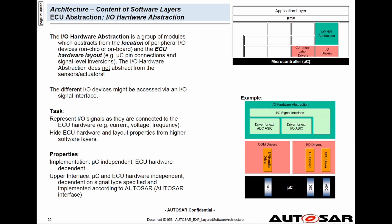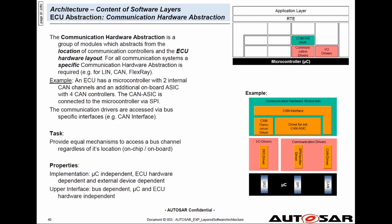IO hardware abstraction abstracts the hardware layout, that is the microcontroller pin, but does not abstract the sensor or actuator which is connected to the pin. So this layer is microcontroller independent but ECU hardware dependent. Next is the communication hardware abstraction, which abstracts the communication interfaces. We have already seen the example of the CAN interface, CANIF, for this.